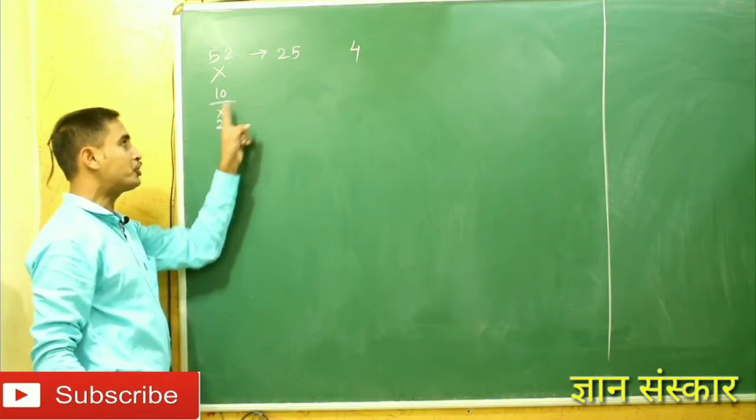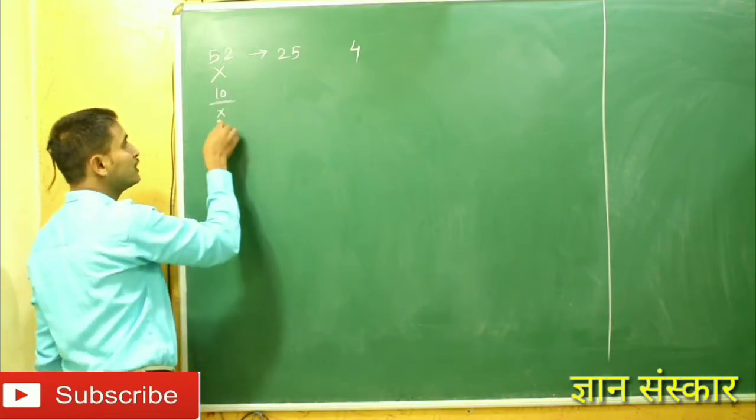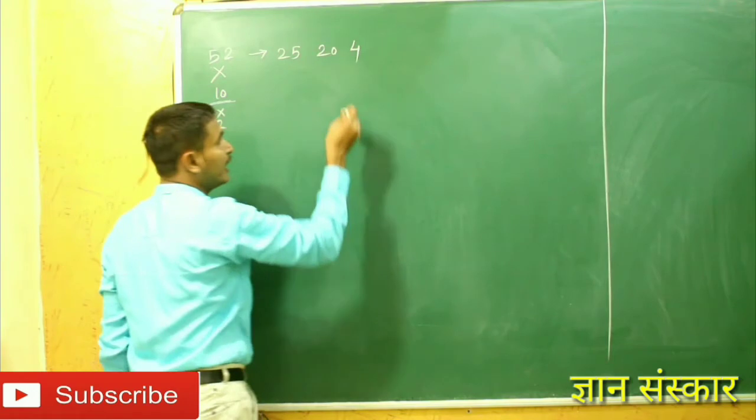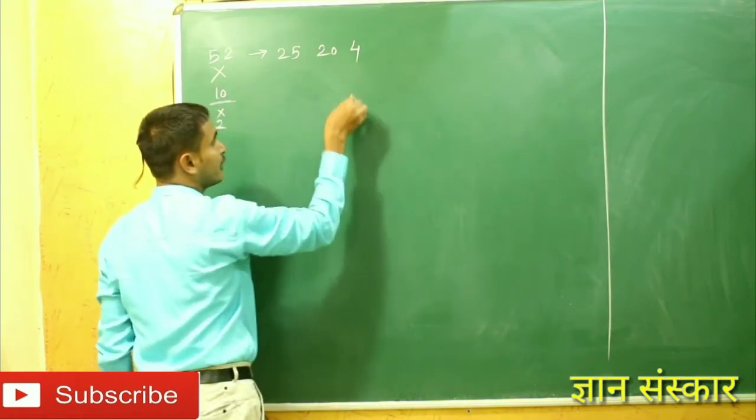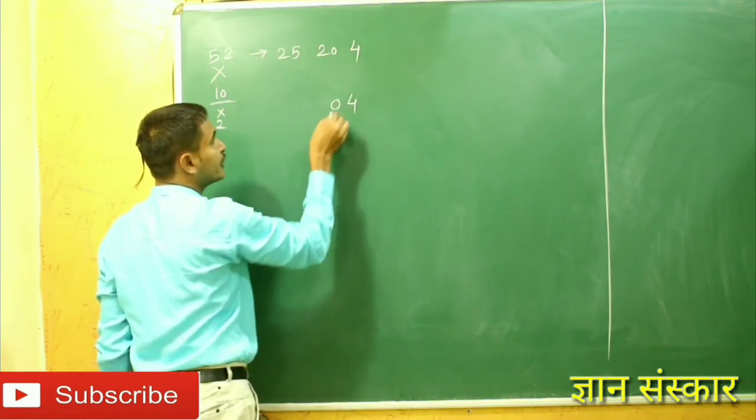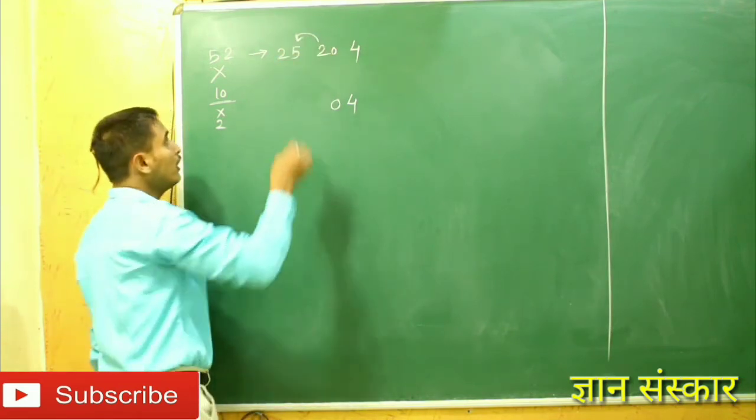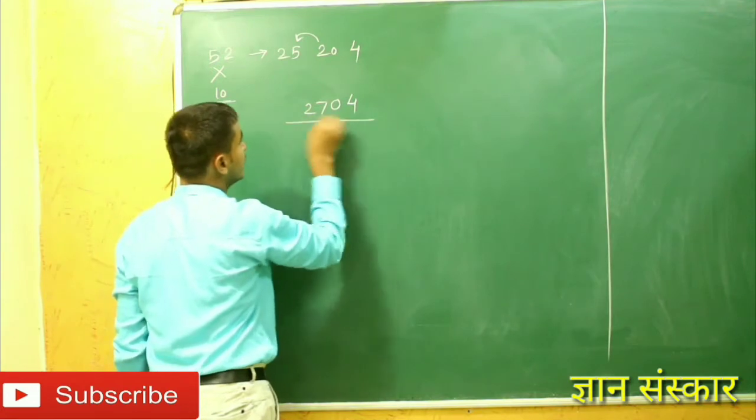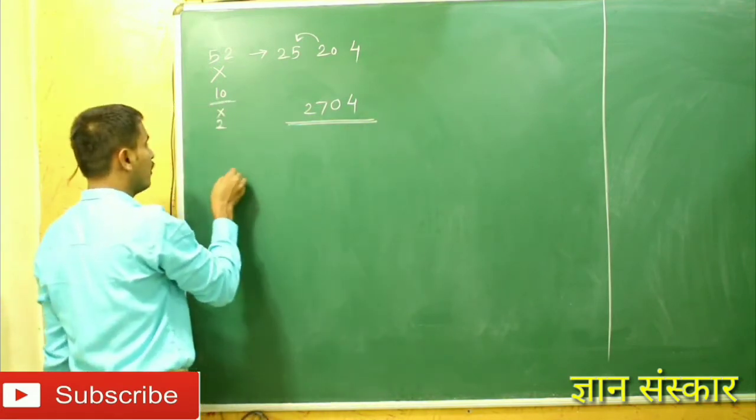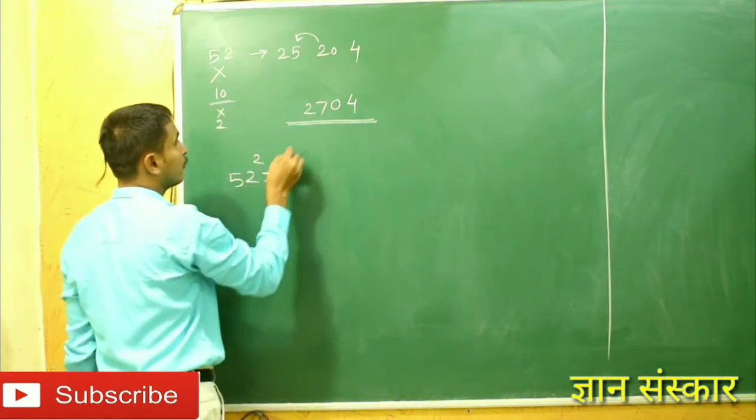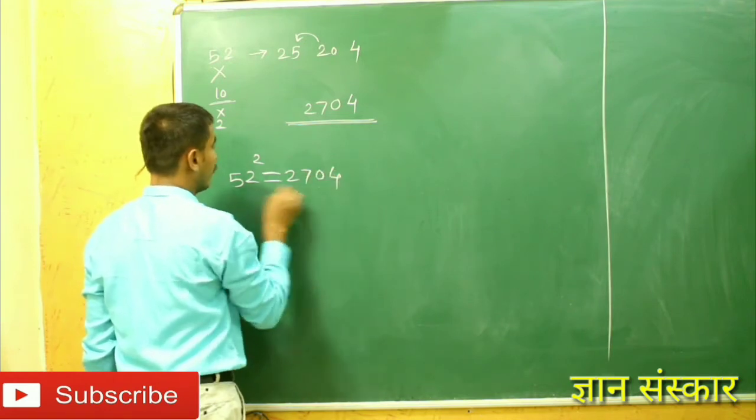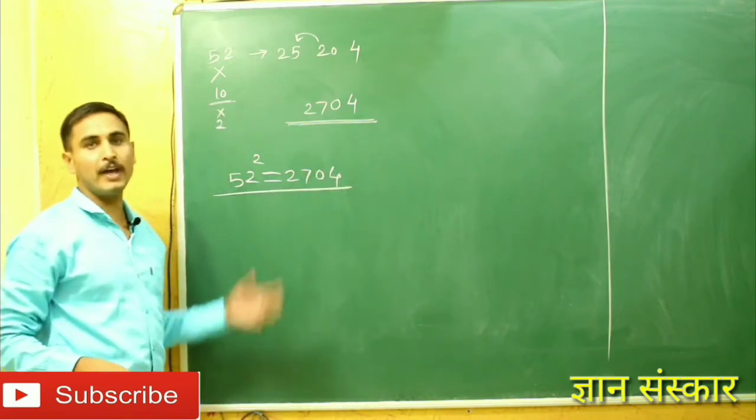Write it as 4, then take this 0, then these 2 will go in carry over. So 25 plus 2, that is 27. And this is the square of 52, that is equal to 2704. Here is your answer, very simple and very accurate.